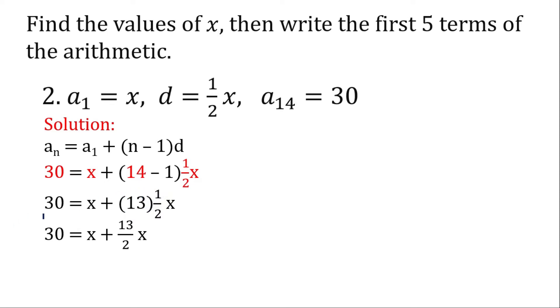Now let's multiply 2 on both sides. 2 times 30 is 60 equals to 2 times x is 2x, then cancel this. We have positive 13x. So we have this now as our equation. Now let's combine 2x and 13x, we got 15x.